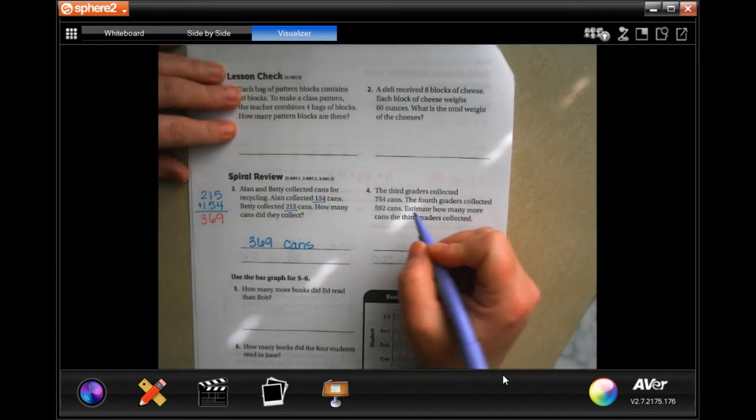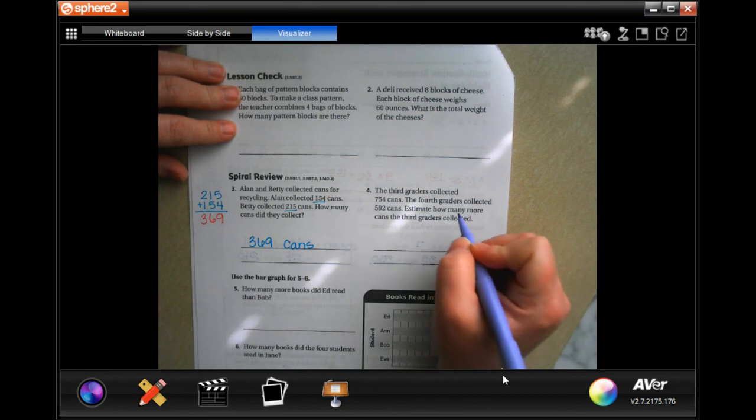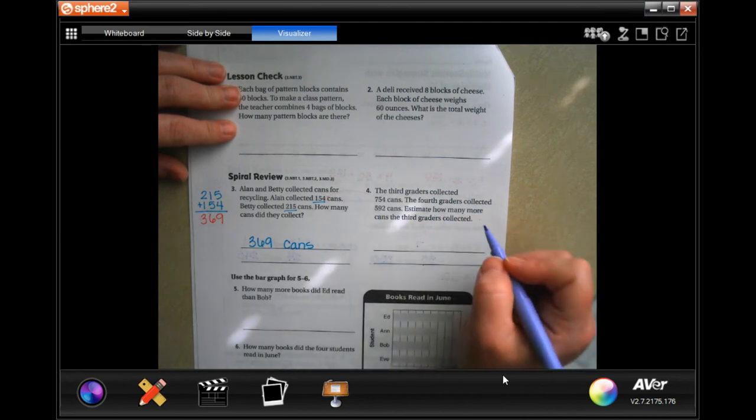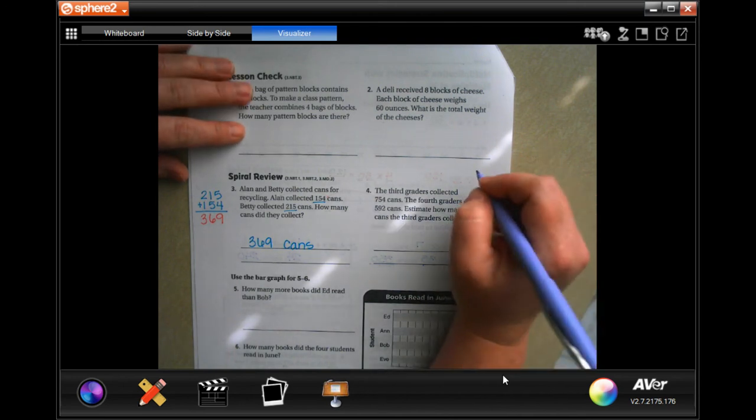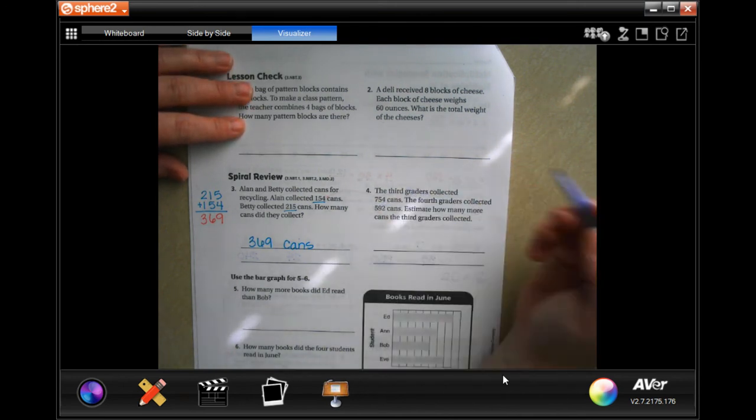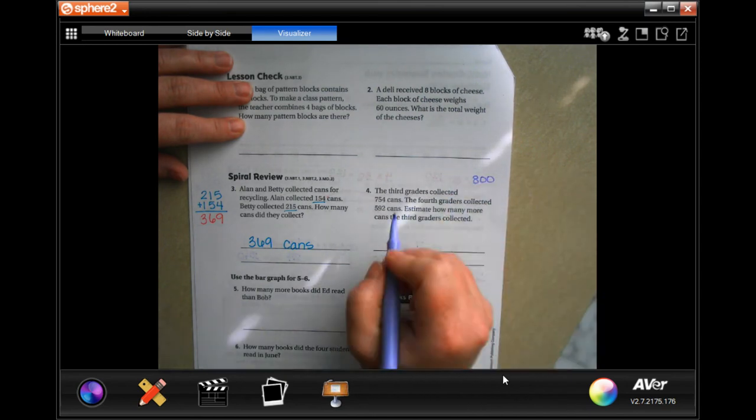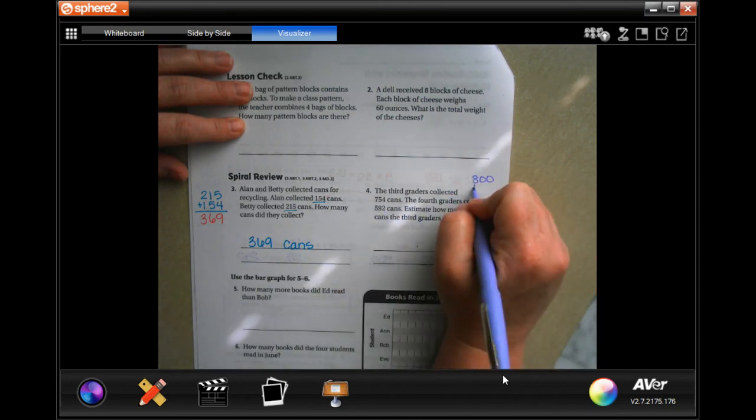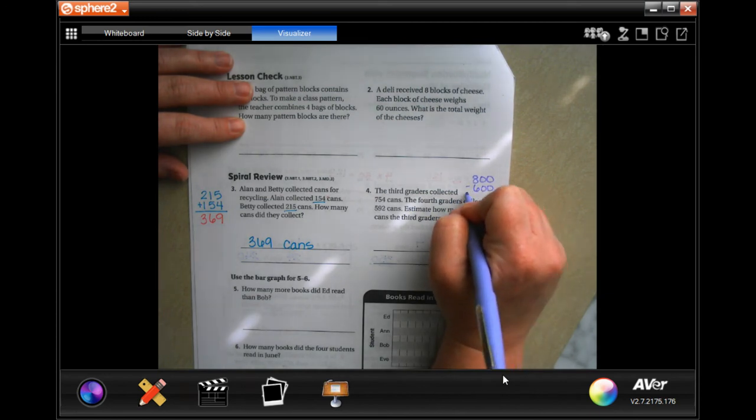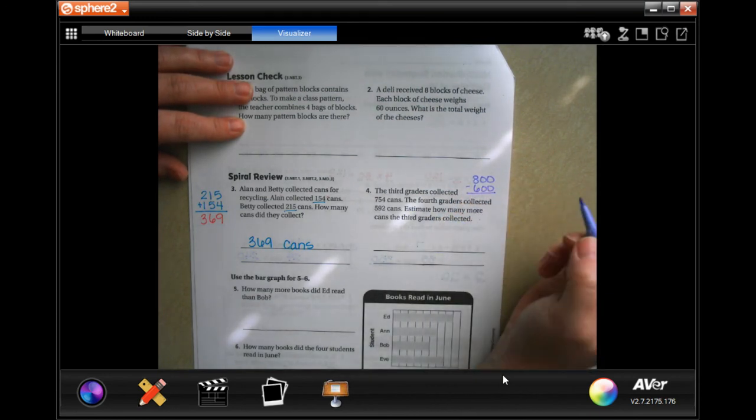The third graders collected 754 cans. The fourth graders collected 592 cans. Estimate how many more cans the third graders collect. So we're going to estimate 754. Let's round that to 800. And 592. Let's round that to 600.